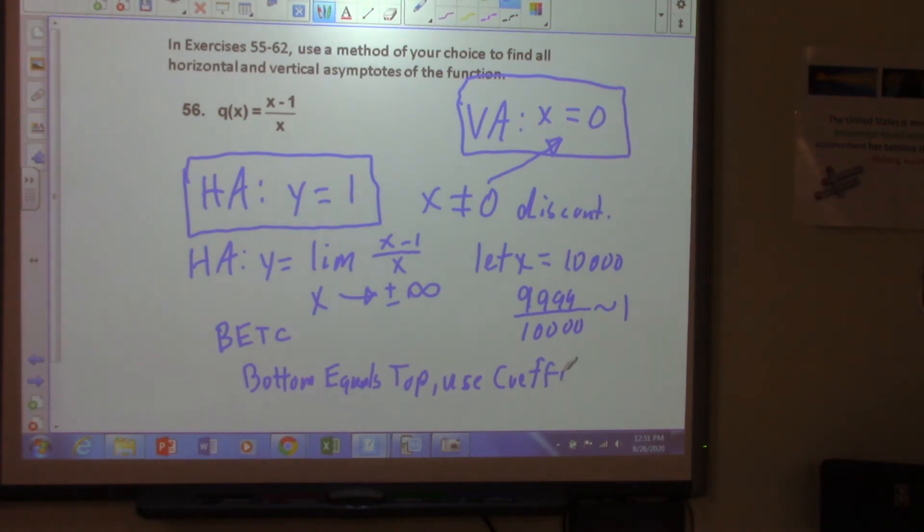Use Coefficients. If I could spell coefficients, that would be nice. Bottom equals top, use coefficients. So in this case, what you do is you take this x. You look at the highest power of x in both the numerator and the denominator. Do these both have the same power of x here? You have x to the first power over x to the first power. So our answer is simply going to be 1 over 1, which equals 1.